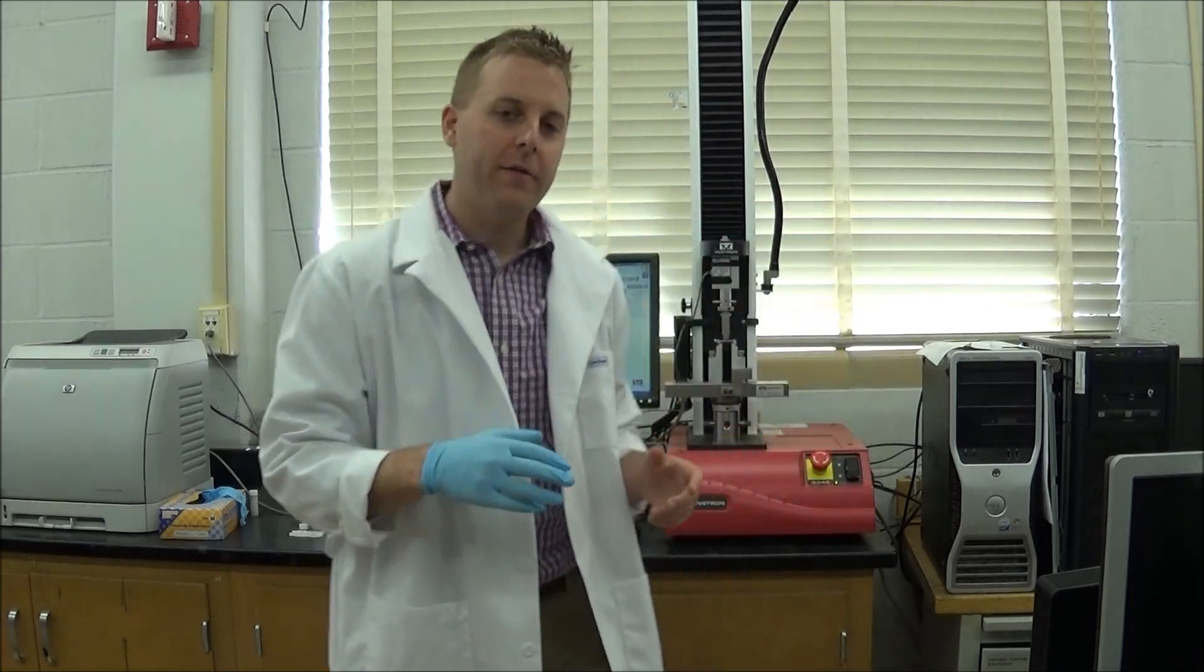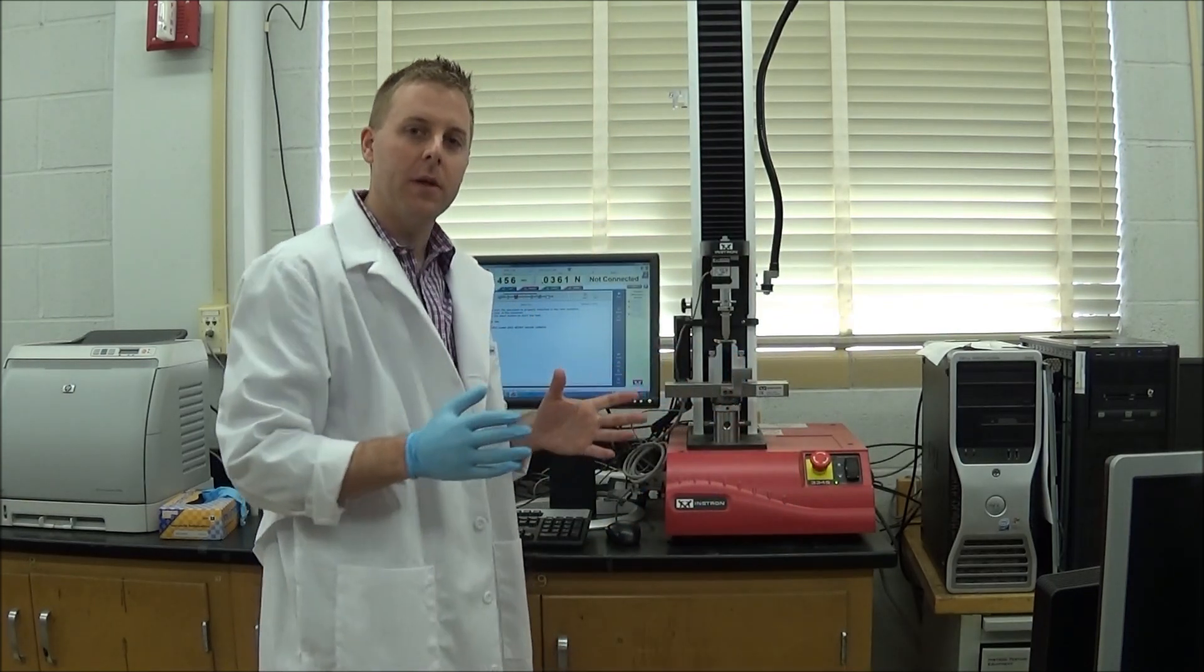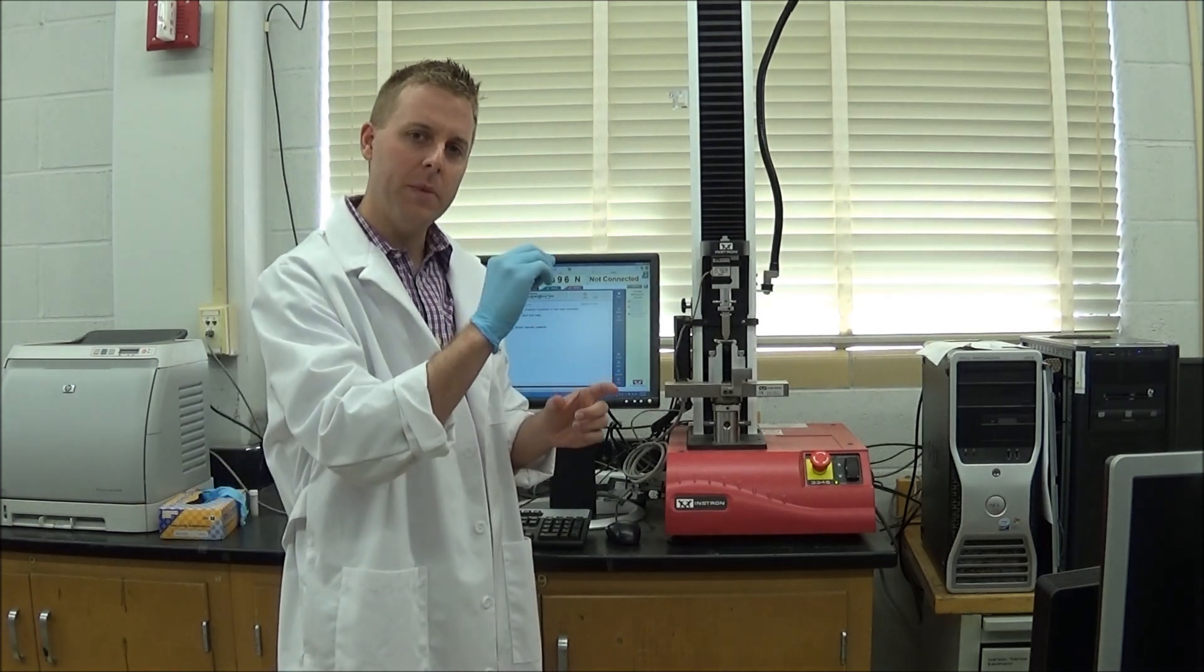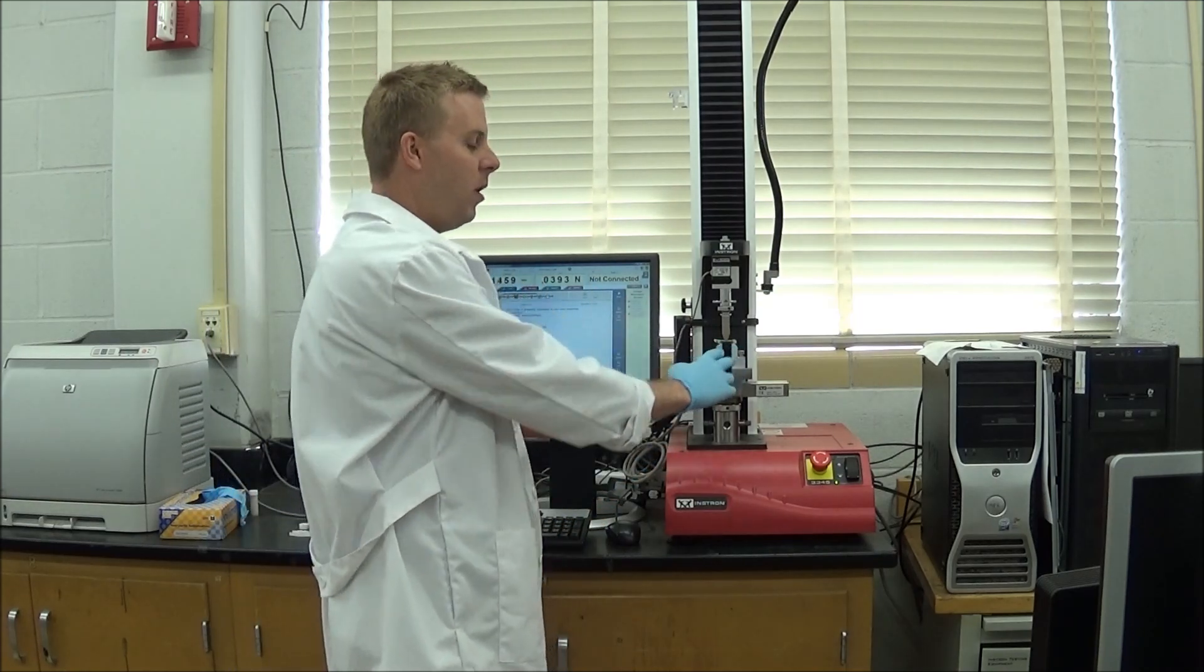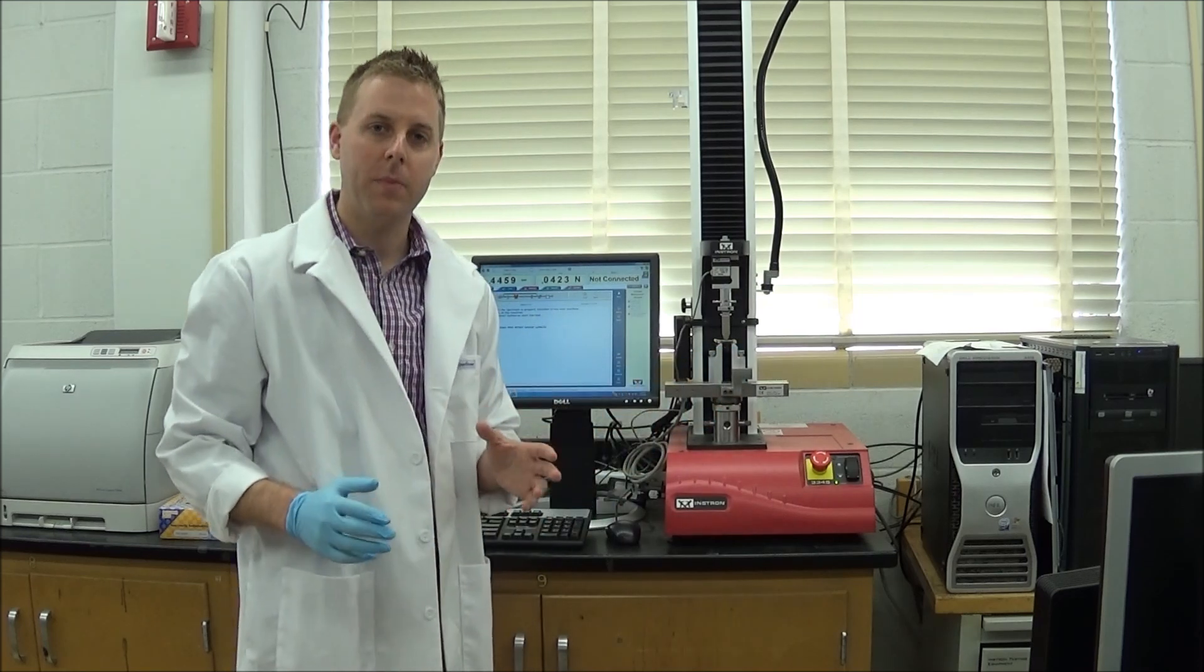Just for a little background information, we use a span length here of eighteen millimeters. That's pretty standard in the bone mechanical testing world. But ASTM standards recommend using a sixteen to one length to thickness ratio. What that means is if the thickness is two millimeters like the thickness of this bone, you should use a span length of thirty-two millimeters. But we don't have thirty-two millimeters to work with on this bone. We only have twenty or so. So we have to compromise, and the compromise that we've accepted in the field is to use an eighteen millimeter span length.